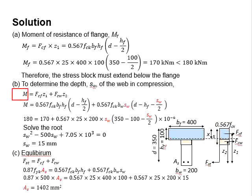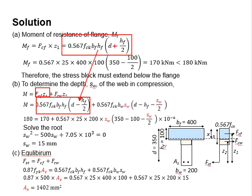Now, the moment of the section here is determined by Fcf multiplied by Z1, plus Fcw multiplied by Z2. Fcf multiplied by Z1 is actually the same as the one that we discussed previously.